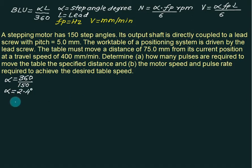The lead screw is 5 mm pitch. Table must move a distance of 75 mm from current position at a travel speed of 400 mm per minute. So table speed V equals 400 and the distance traveled is S.